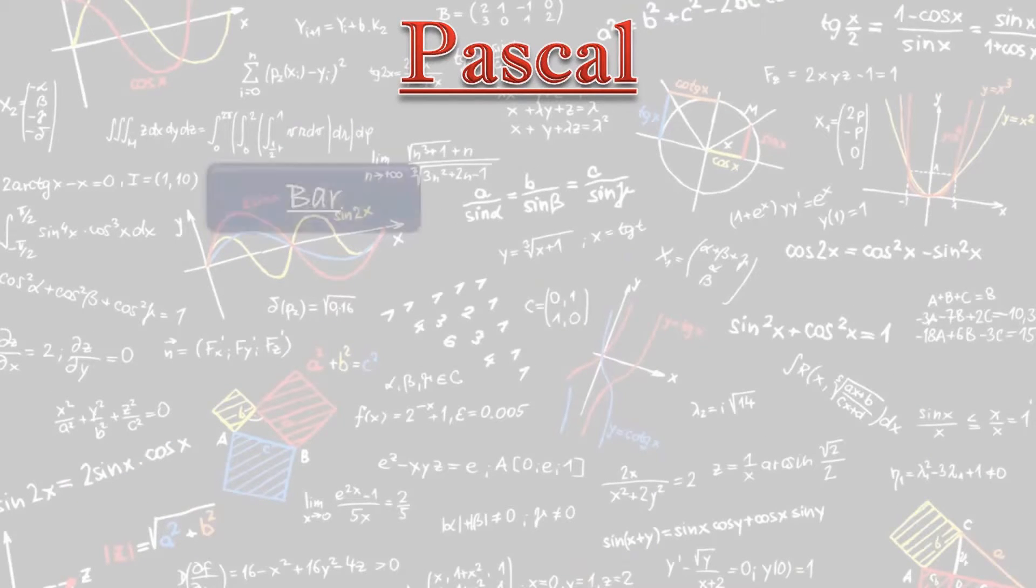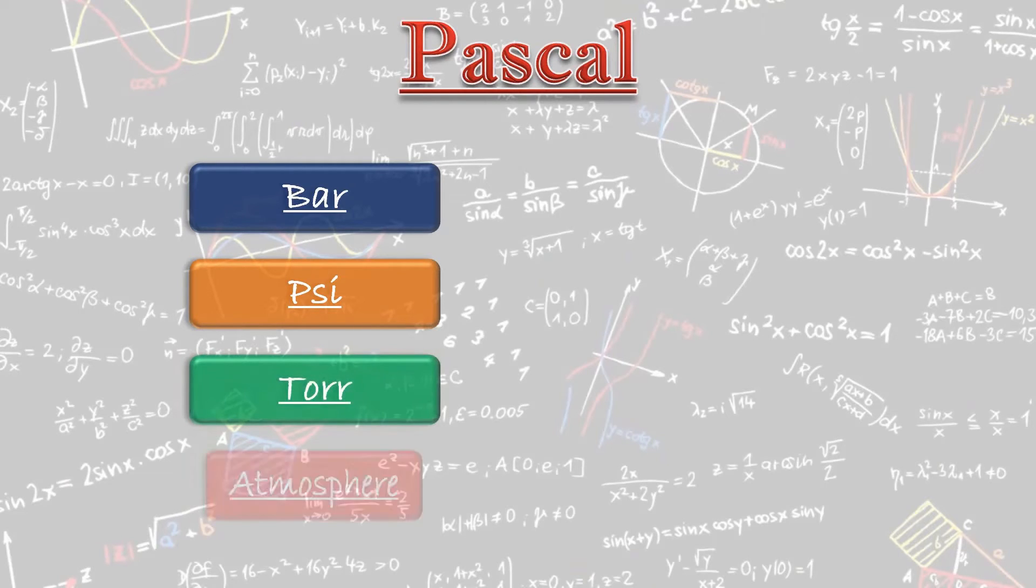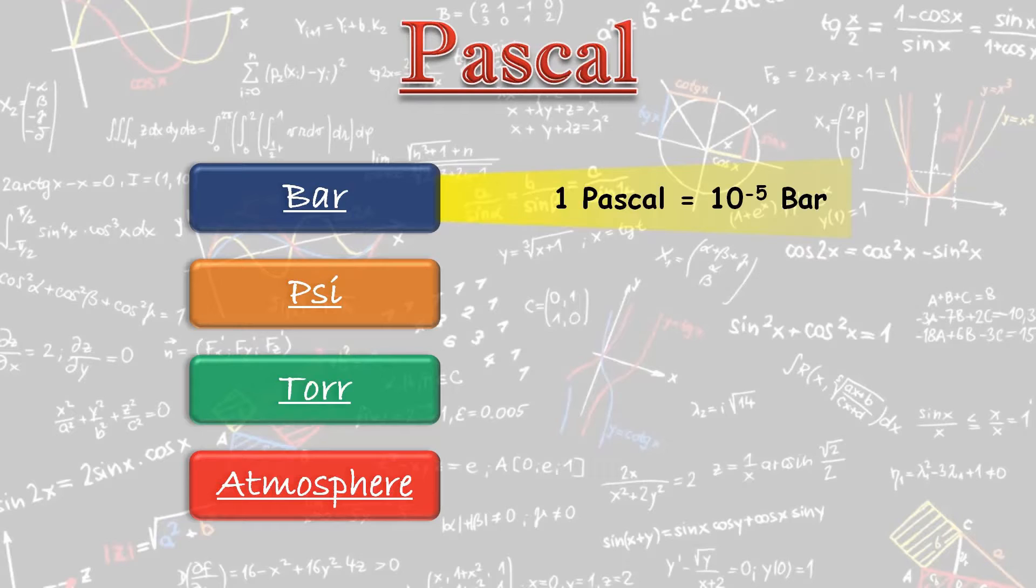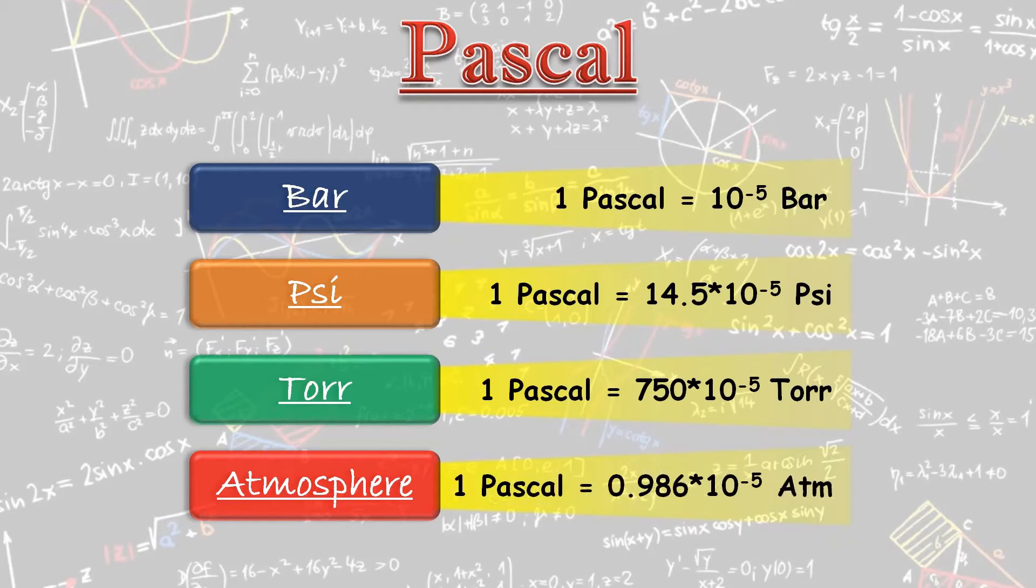Now let's see correlation of Pascal with bar, PSI, Torr and atmosphere. 1 Pascal is equal to 10^-5 bar. 1 Pascal is equal to 14.5 × 10^-5 PSI. 1 Pascal is equal to 750 × 10^-5 Torr. And 1 Pascal is equal to 0.986 × 10^-5 atmosphere.